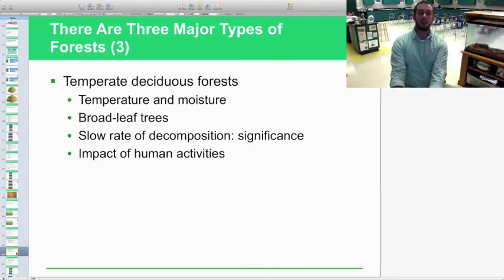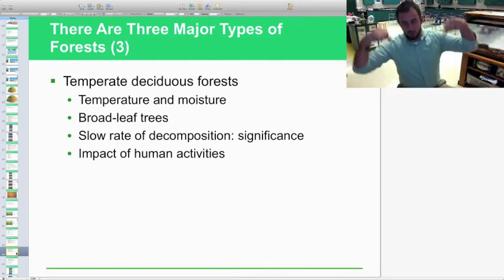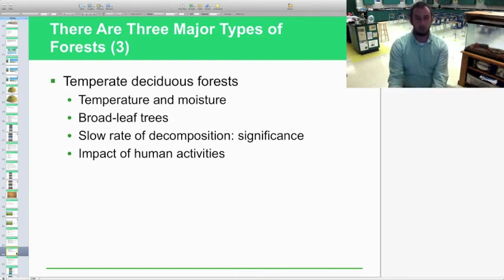Then you have the temperate deciduous forest. We have broadleaf trees like your oaks, go white oak, your maple trees, your sycamores. All those are very broadleaf, big leaves for capturing as much sunlight as they possibly can for photosynthesis. Our decomposition rate is a lot slower because we have so many leaves falling off the trees that organisms have a hard time keeping up with that. So sometimes you tend to get lots of leaf litter piled up in your forest. Impact of human activities, this is probably the area that we've inhabited the most other than the grasslands in the United States because it's just a good climate for us, beautiful place to live.